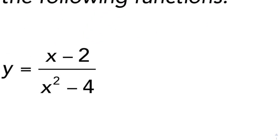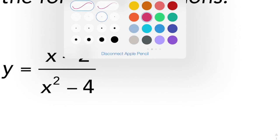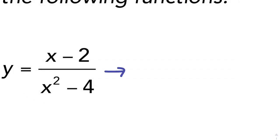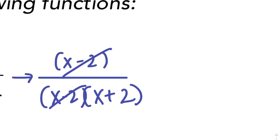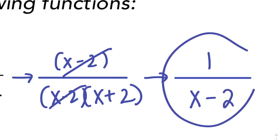So remember, always start by factoring. So I see a difference of squares. So I'm going to rewrite this as x minus 2 over x minus 2 times x plus 2. That ends up canceling, and I'm left with 1 over x minus 2.